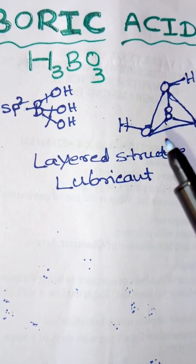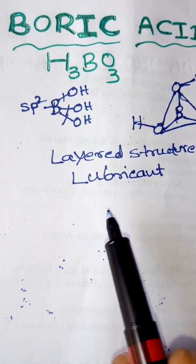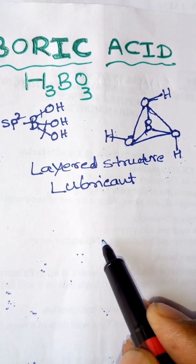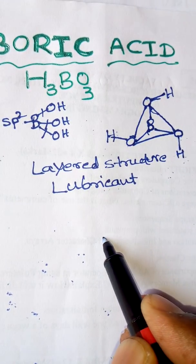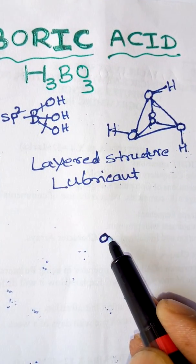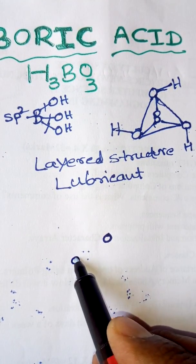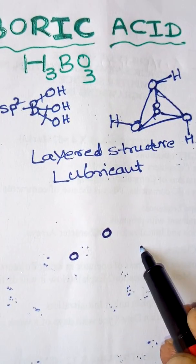so graphite is also used as a lubricant. Now we will draw the layered structure of boric acid. In order to draw the structure, first of all we draw the oxygen atoms in the form of hexagons like this.